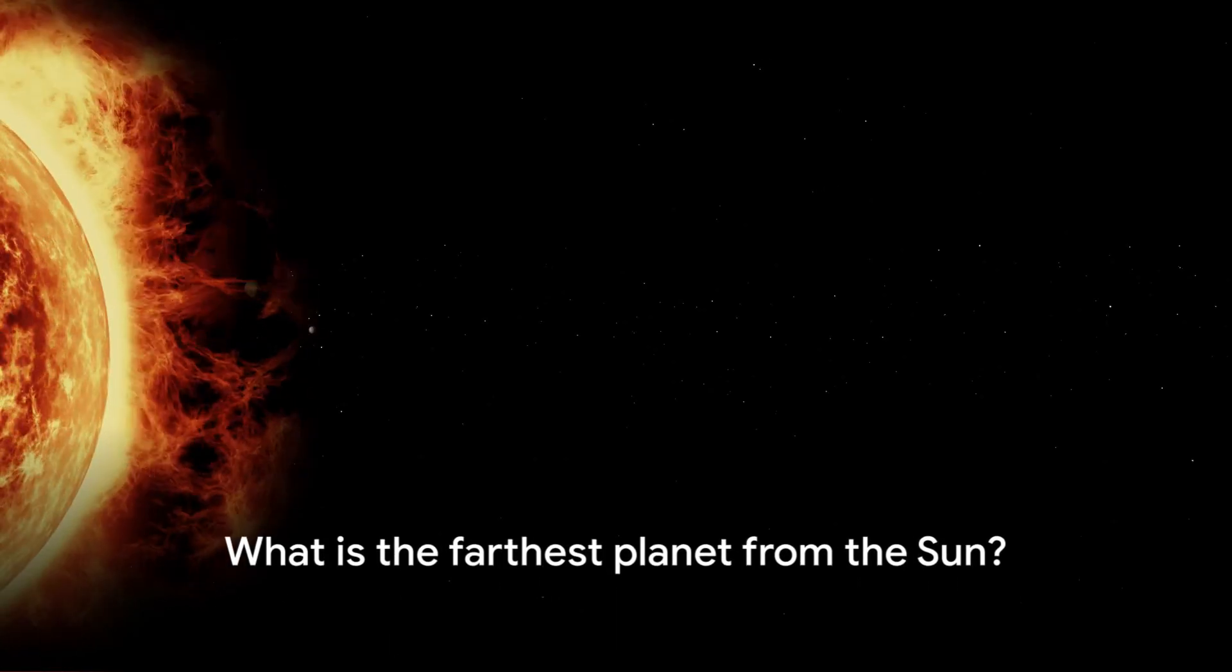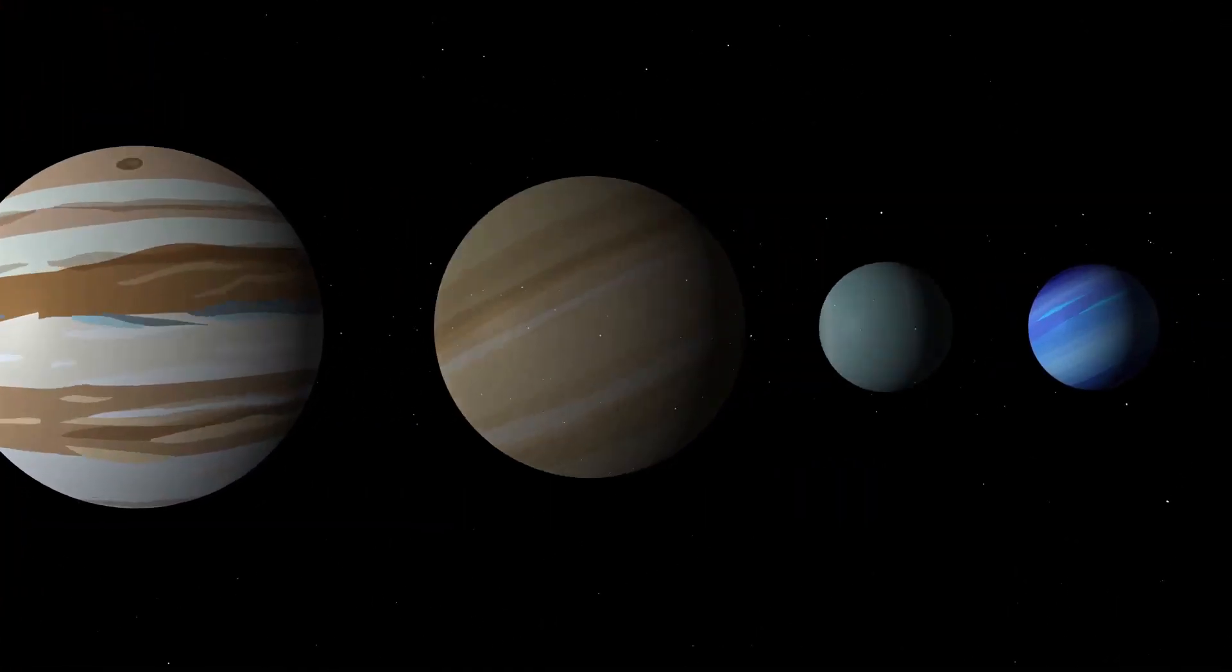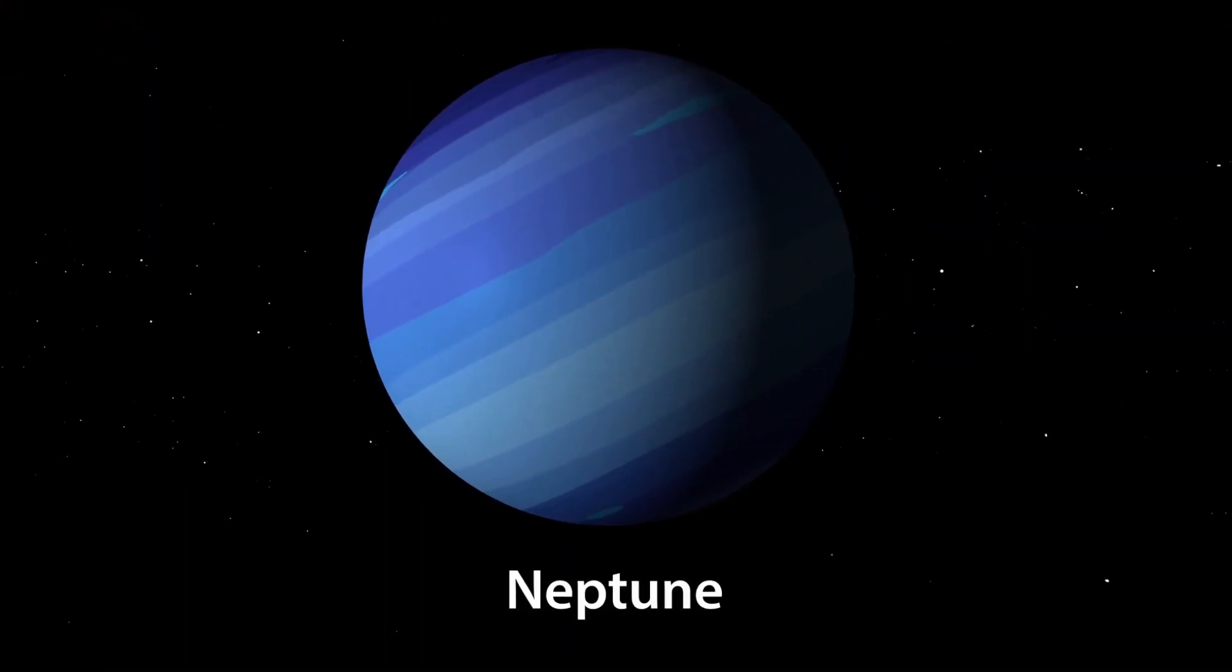Neptune is the farthest planet from the sun. It orbits at an average distance of about 2.7 billion miles, 4.3 billion kilometers, from the sun.